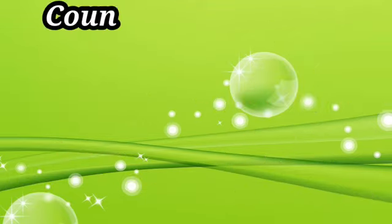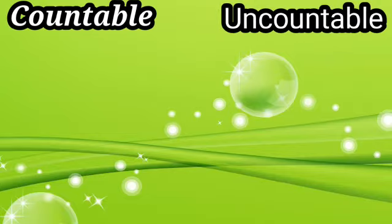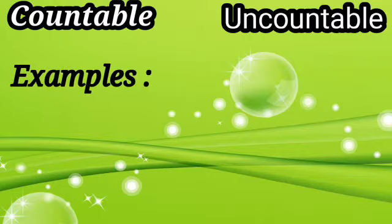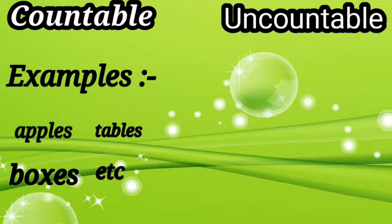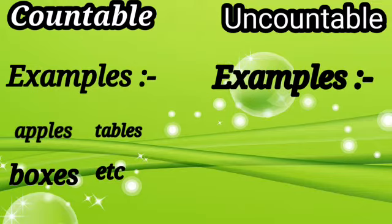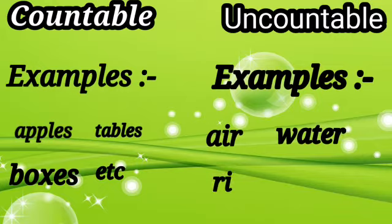Let's talk about countable noun and uncountable noun. This is very simple. Countable noun means the nouns that can be counted, and uncountable noun means the nouns that cannot be counted. Examples of countable nouns: apples, tables, boxes, etc. Examples of uncountable nouns: air, water, rice, wheat and such more.